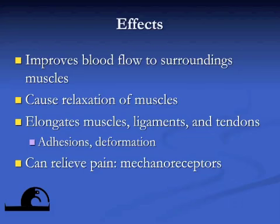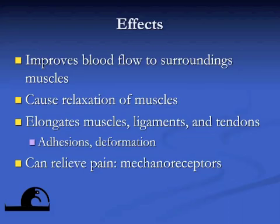We can elongate all of the soft tissue structures found in the muscles, ligaments, and tendons, and it has also been shown to actually deform potential adhesions. In cases where someone may have had an injury resulting in an inflammatory response and scar tissue formation — especially if it has never been stretched or treated — traction at higher intensities can be used to induce a creep effect or stretching deformation of soft tissue structures, affecting and deforming adhesions. Many of those tissues run in a longitudinal fashion with the spine, which is the direction we typically want to stretch them.